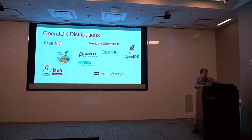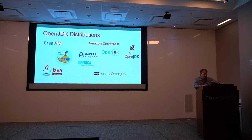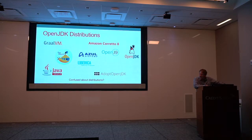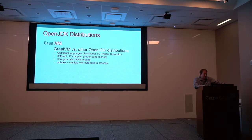What makes GraalVM different from all the other OpenJDK distributions? GraalVM gives you support for all the additional languages — JavaScript, R, Python, Ruby, et cetera. It has a different JIT compiler which they're integrating into newer versions of Java. It can generate native images. And it has this concept called isolates, which allow multiple VM instances in-process — potentially very beneficial for Jakarta EE and container-based technologies.